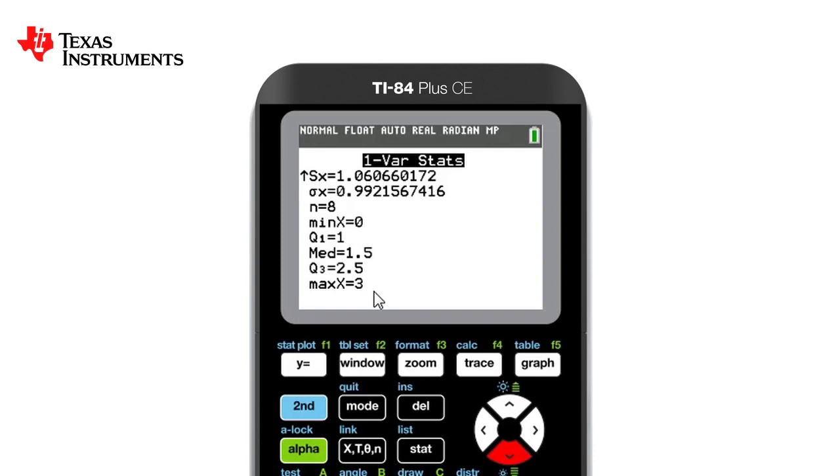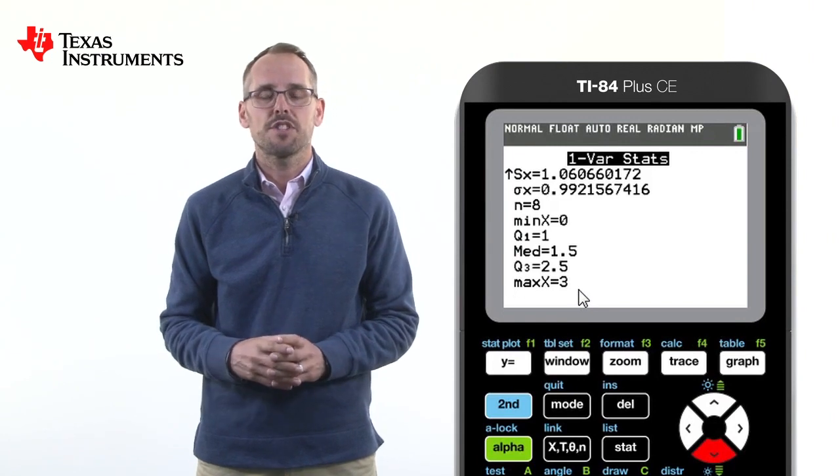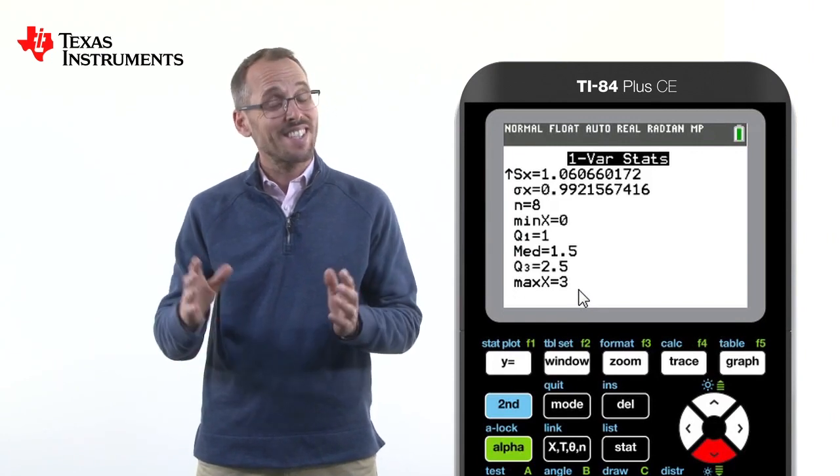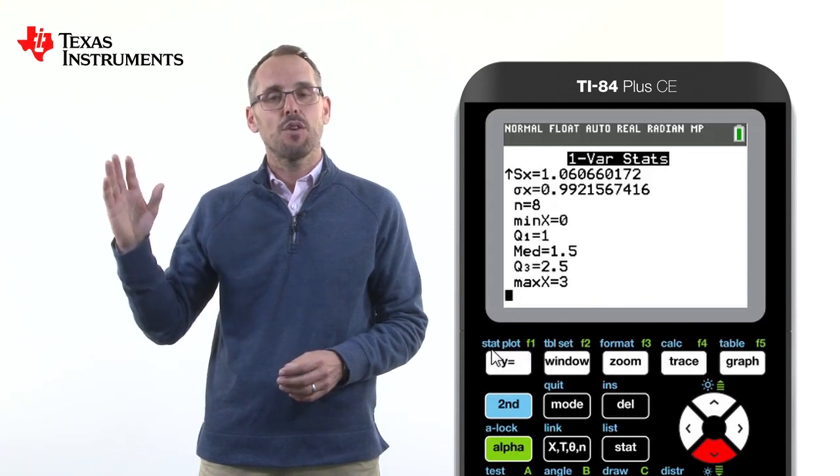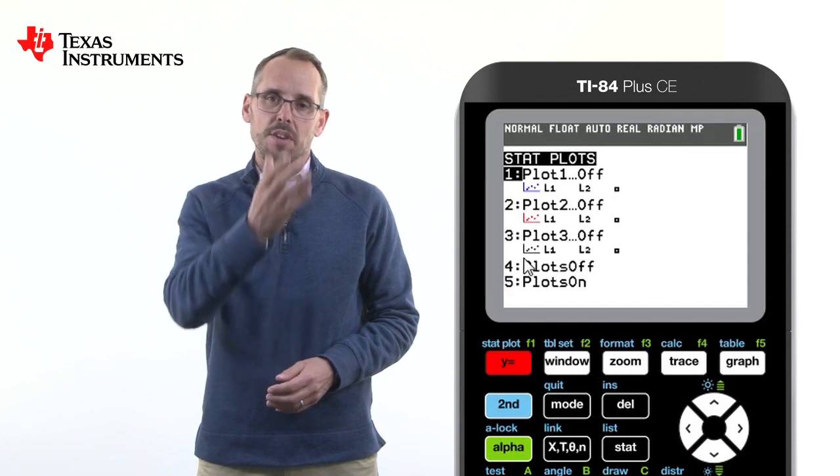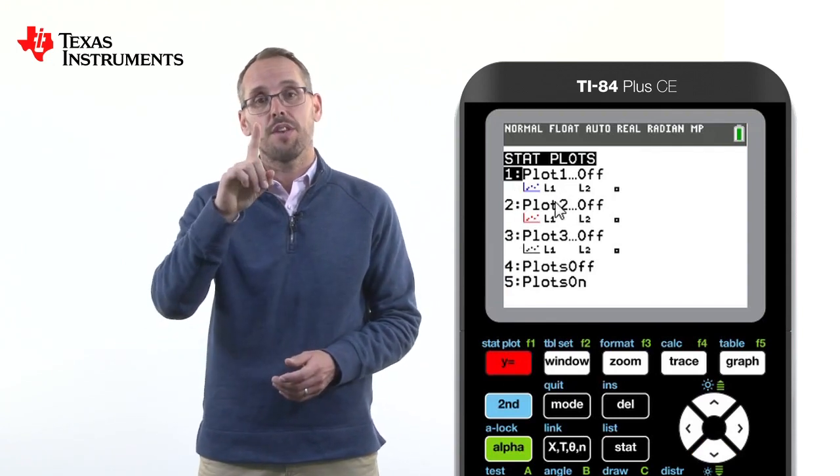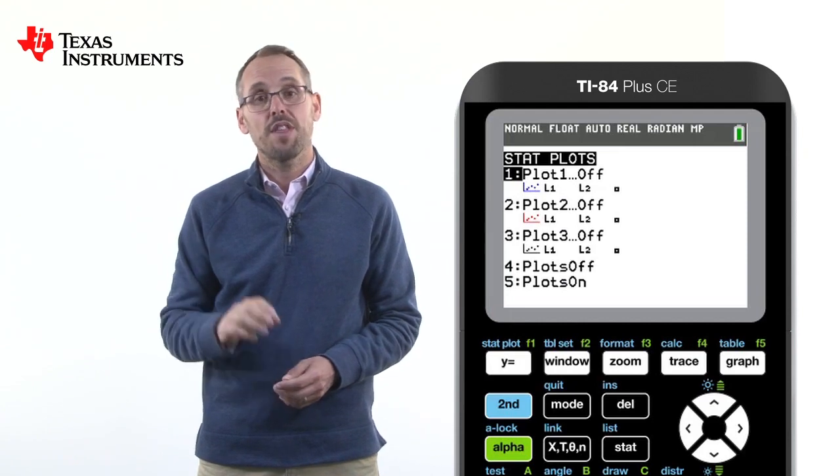We can now get the graphics calculator to produce us a box and whisker plot of this. So how do we get the graphics calculator to produce us this box and whisker plot? Well, it's a stat plot. This button is in the top left hand corner and we press second y equals. You'll notice that we can type up to three plots, but for now we're going to focus on plot one. Either press one or the enter button.